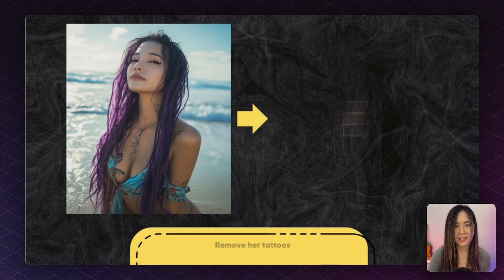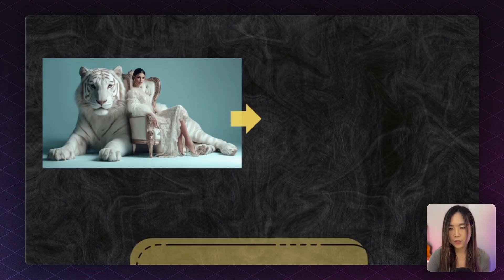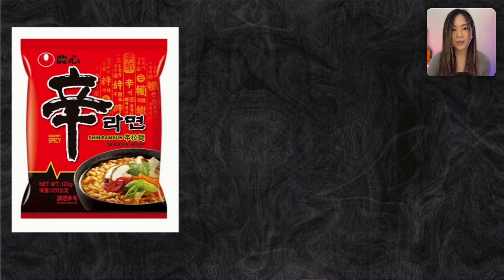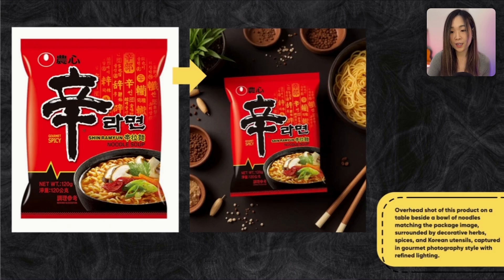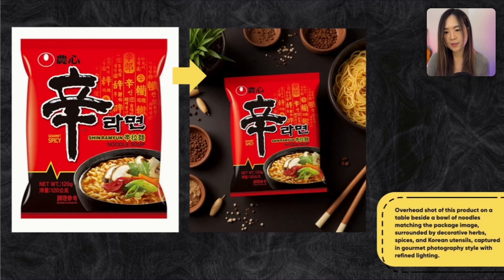Next we have regional edits — one of my favorite breakthroughs. Before Context, you had to manually select and mask the area you want to change. Now, for this woman with tattoos, I simply typed 'remove the tattoo' and it knew exactly where the tattoo was and removed it flawlessly. You can also swap objects with just a prompt without any extra steps. I also tested Context for product shots — I started with a ramen pack that had a lot of text on it and it turned it into stylized product photography. About 95% of the text came out correct, with some blurriness in areas, but overall the result is pretty good.